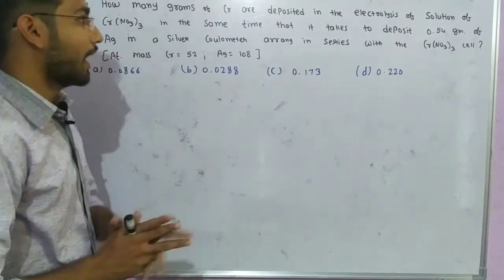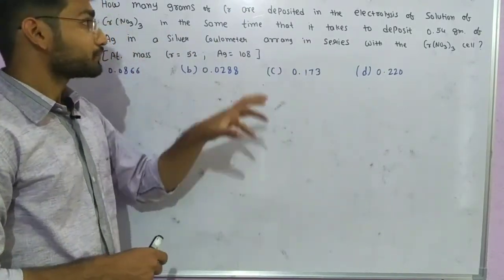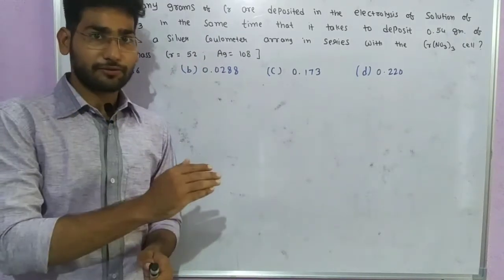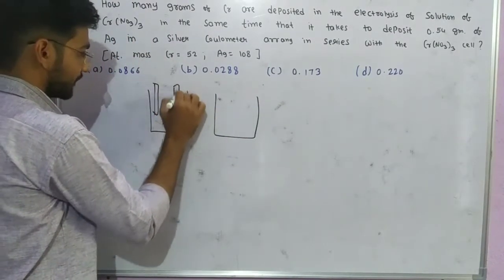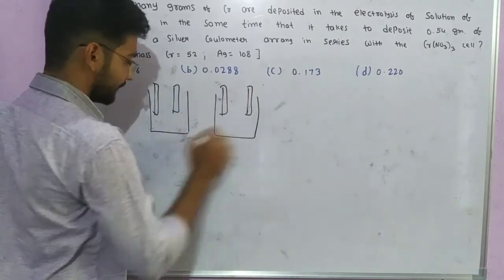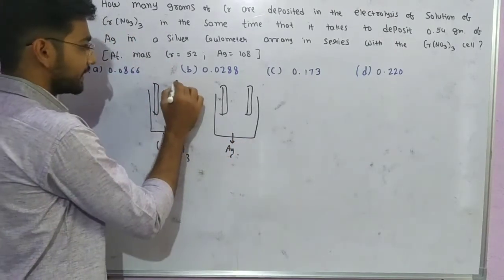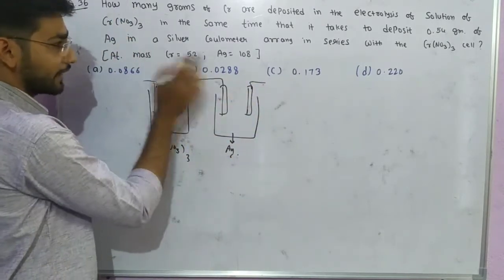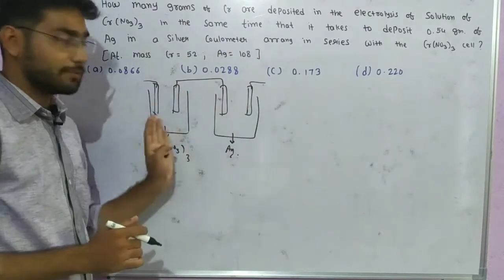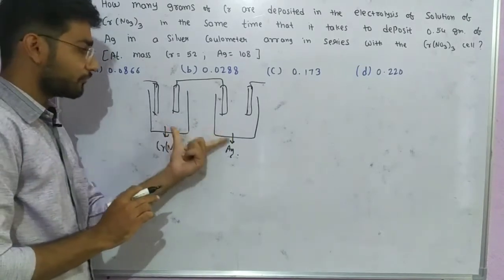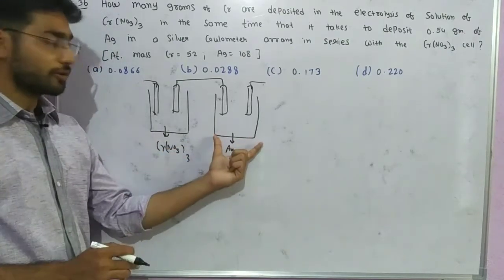Faraday's second law states that when the same current passes through different electrolytic cells in series, the number of equivalents deposited will be the same in both cells. Since the same current passes through both the chromium nitrate cell and the silver coulometer cell, the number of equivalents deposited in each cell will be equal.